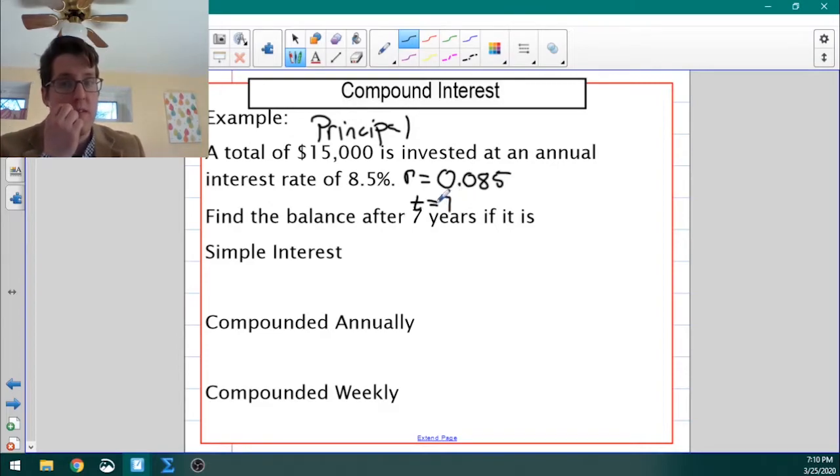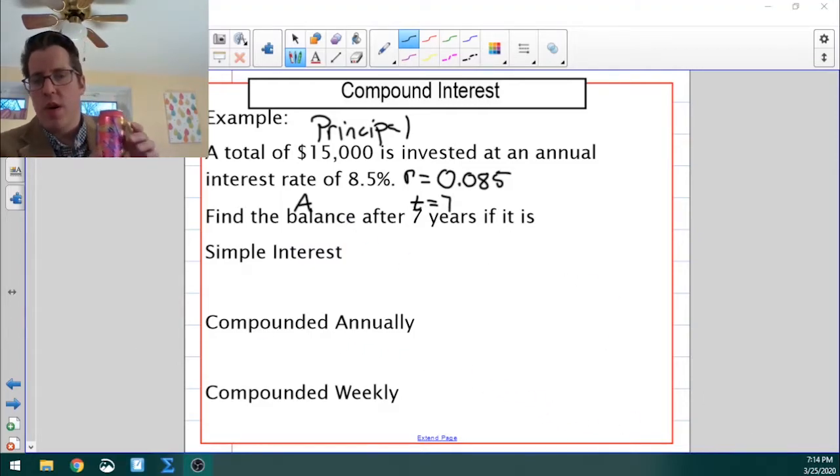We want to find the balance after 7 years. That's going to be t equals 7. If it is simple interest, if it's compounded annually, and if it's compounded weekly. So the balance that we're looking for is that A, the future value or the future amount. So let's take a look at those. Let's plug into these three formulas and see how that works. If you want to do that yourself and then check, you can just pause the video.